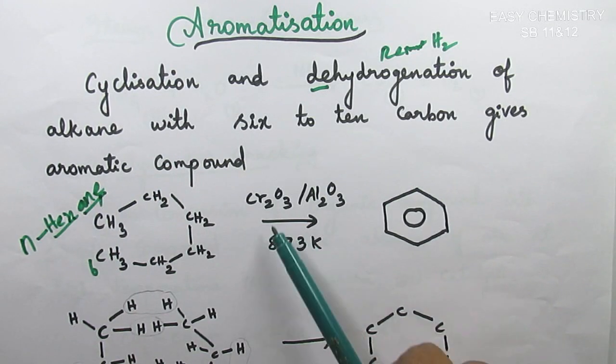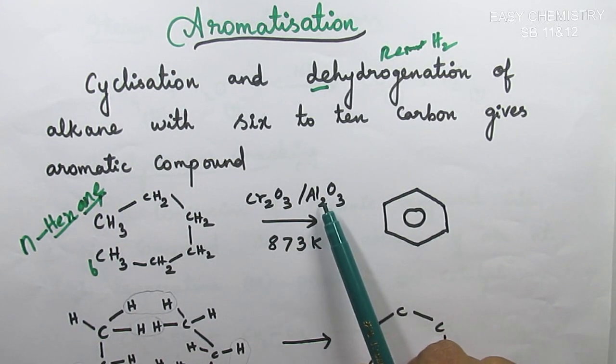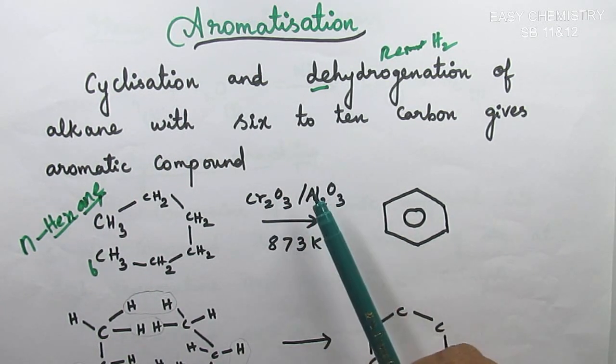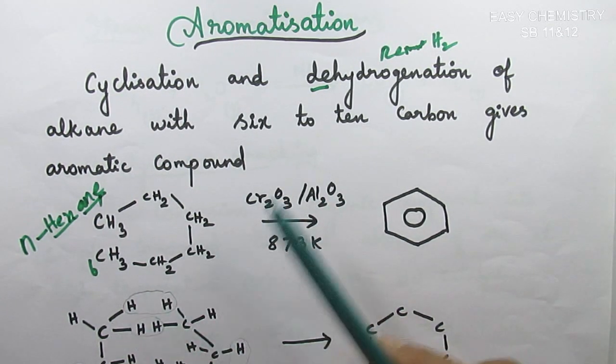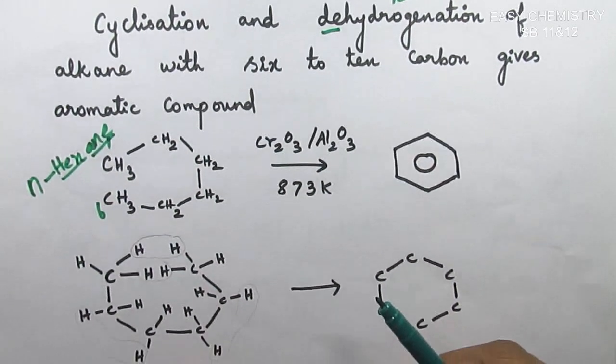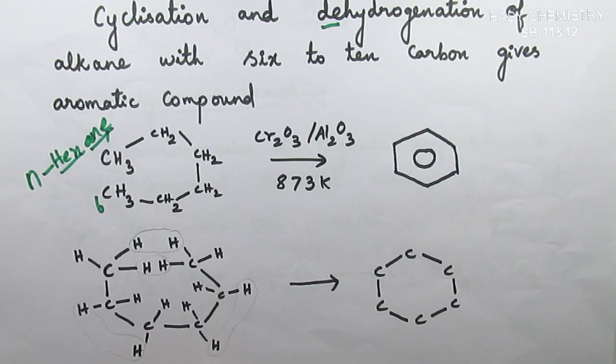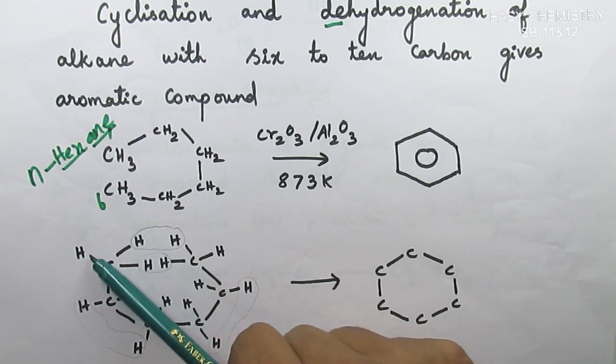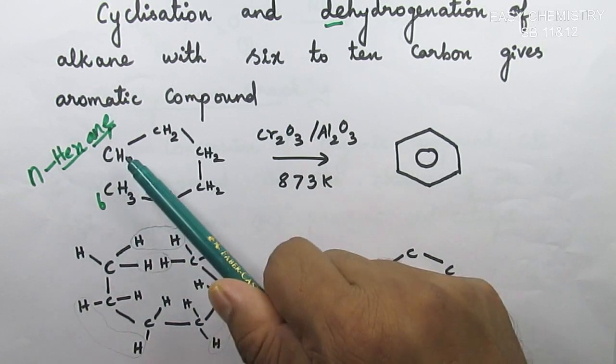In the presence of Cr2O3 and Al2O3, they are very good dehydrogenation agents. They remove H2. Hydrogens are removed. We are going to look at CH3 at the terminal carbon.